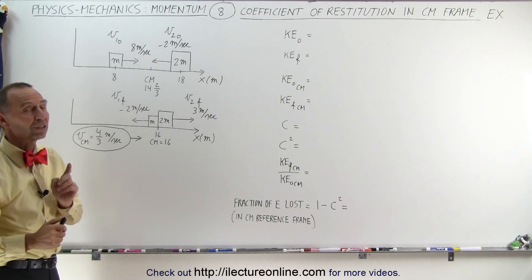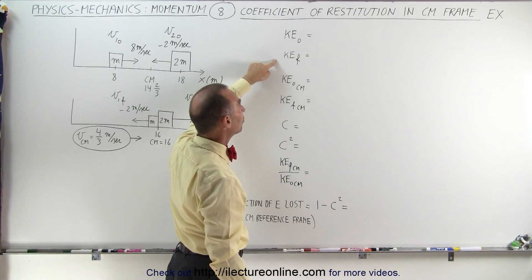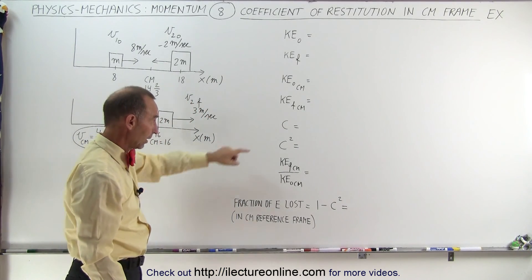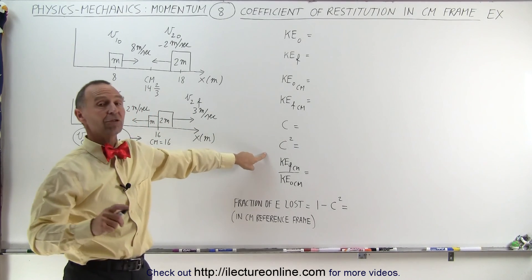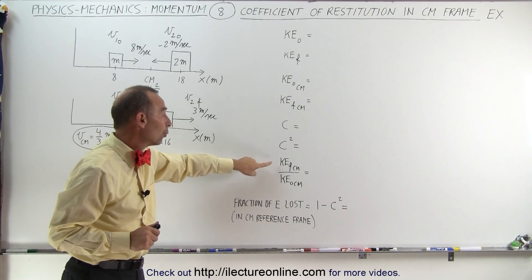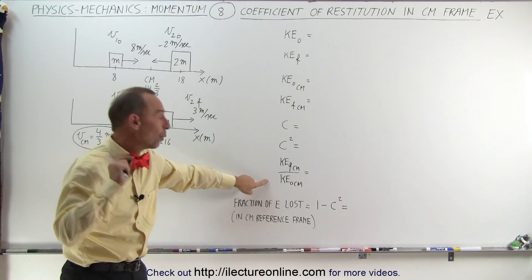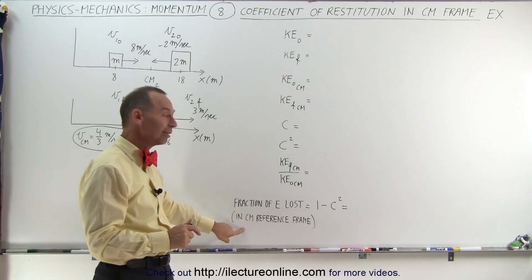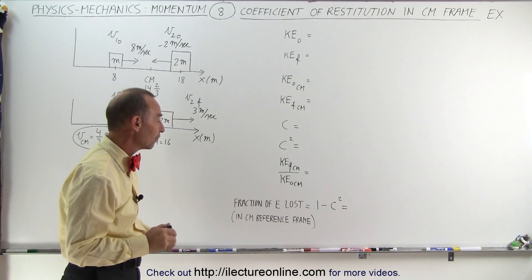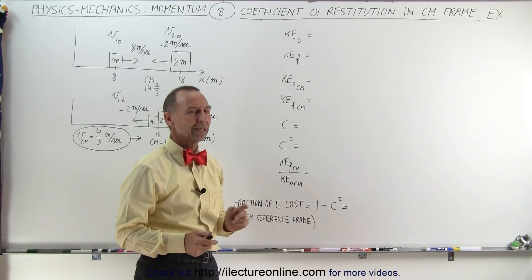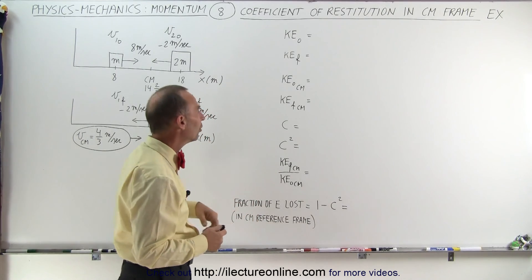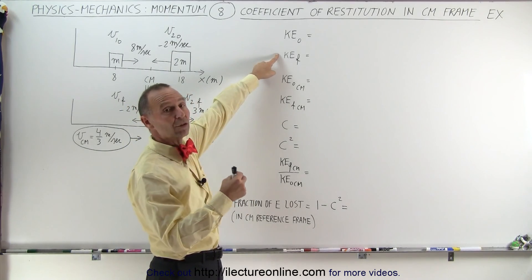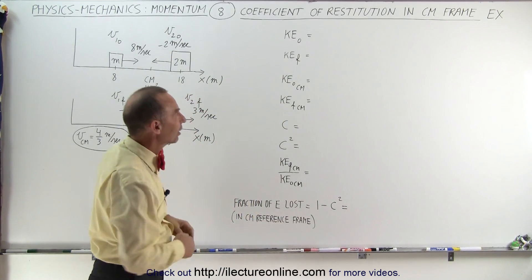What we're going to do is calculate the initial and final kinetic energies, the initial and final kinetic energies relative to the center of mass, the coefficient of restitution, the coefficient of restitution squared, the ratio of final to initial kinetic energy relative to the center of mass, the fraction of energy lost (which should be 1 minus C squared), and for comparison the actual energy loss using kinetic energies relative to the stationary Earth.